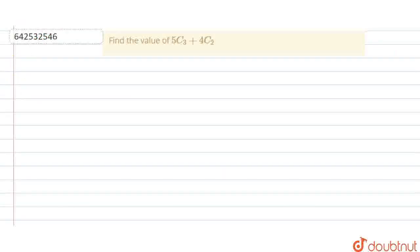So basically the question is given. We have to find the value of 5C3 plus 4C2. What is C here? Here C represents combination.